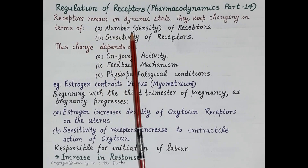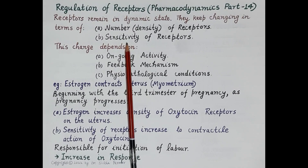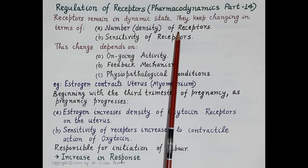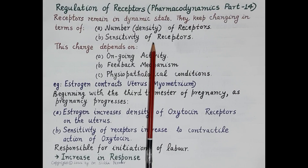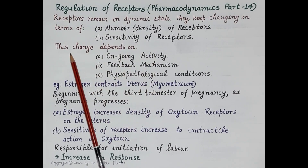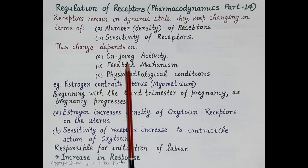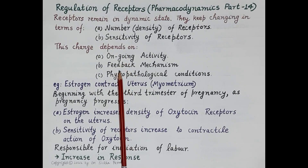Receptors change in terms of number or density, and also in terms of sensitivity. The number of receptors can increase or decrease, and similarly sensitivity to a particular neurotransmitter or hormone can increase or decrease depending upon the requirement. This change depends on ongoing activity in the body cells or tissues, as well as on feedback mechanisms.